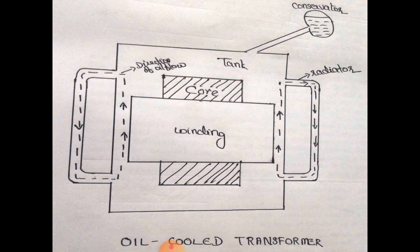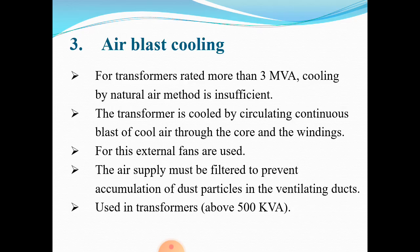This is an oil cooled transformer. Next is air blast cooling. For transformers rated more than 3 mega volt-amperes, cooling by the natural air method is insufficient. The transformer is cooled by circulating a continuous blast of cool air through the core and windings. External fans are used, and the air supply must be filtered to prevent accumulation of dust particles in the ventilating ducts. This type of cooling system is used in transformers operating above 500 kilo volt-amperes.